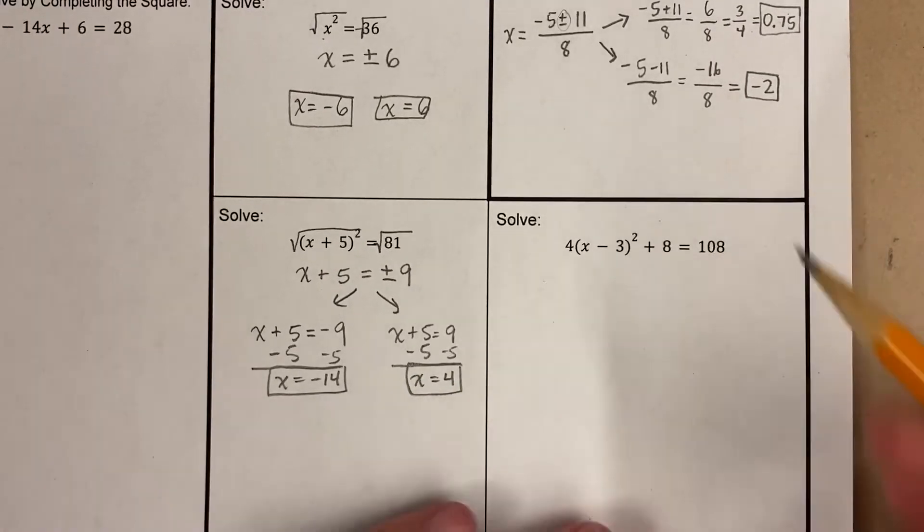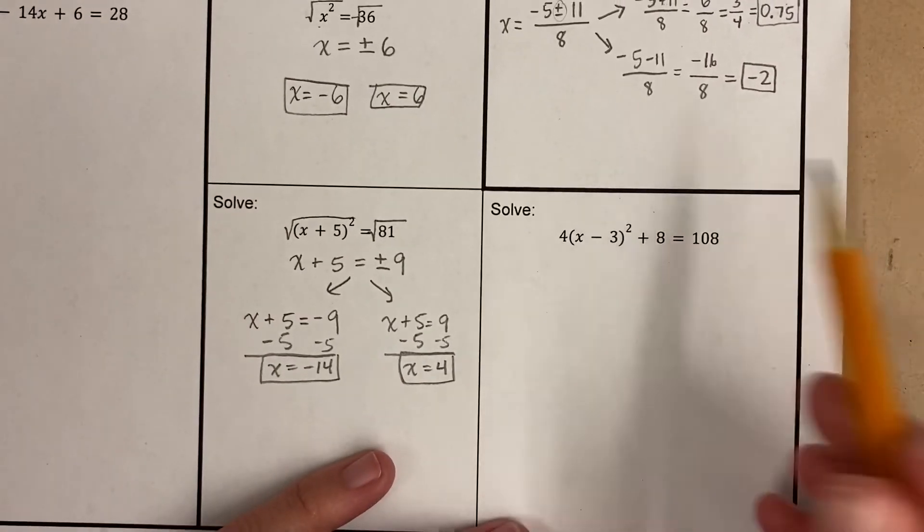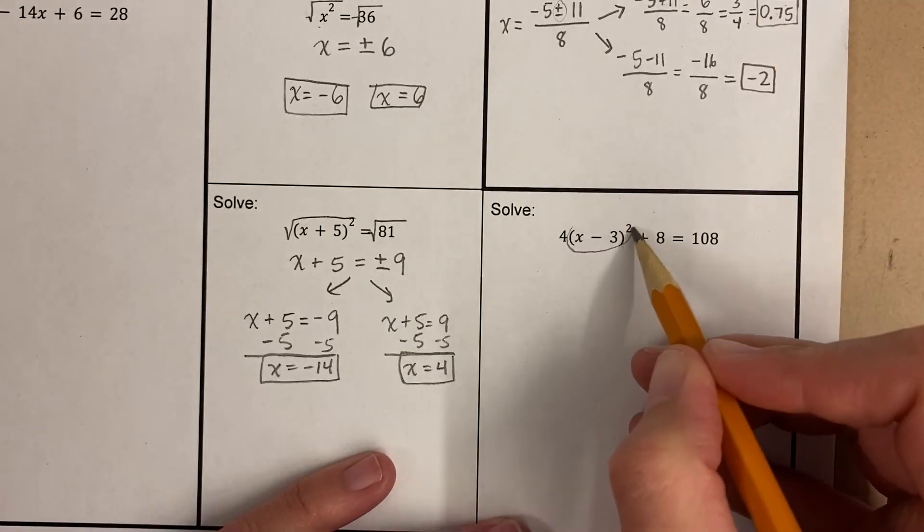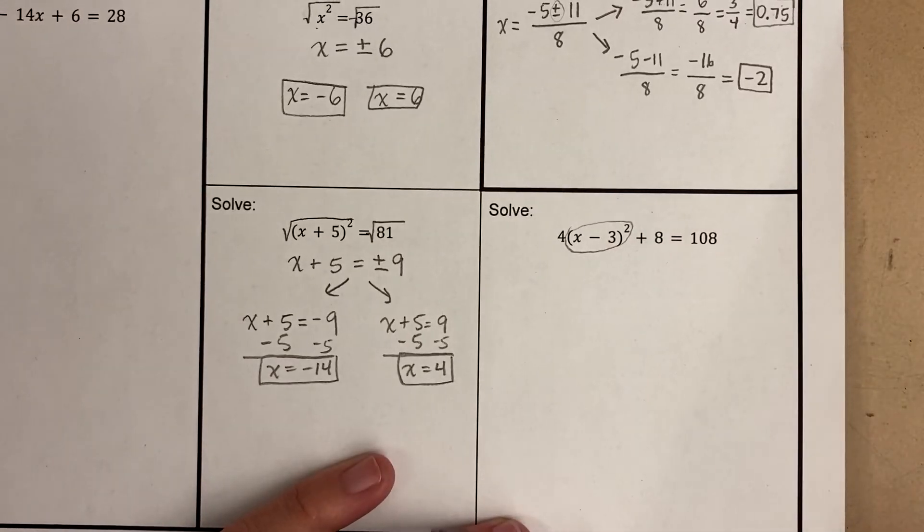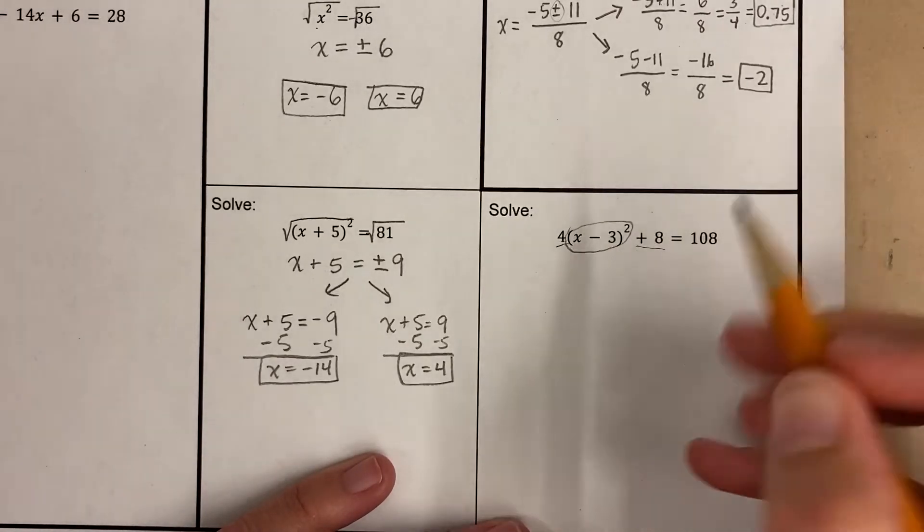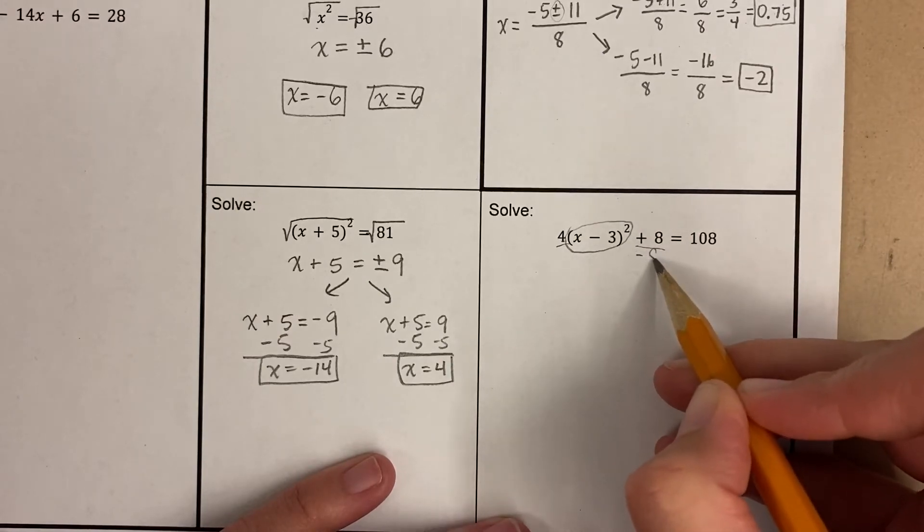Now, here, you might think, oh, I'm something squared. I square root it. Yes, but not yet, because this thing that is squared, that has to be by itself first. So how do we get it by itself? Well, we just get rid of the other junk. We're gonna get rid of these two things. We deal with addition and subtraction first, so I'm gonna subtract 8.